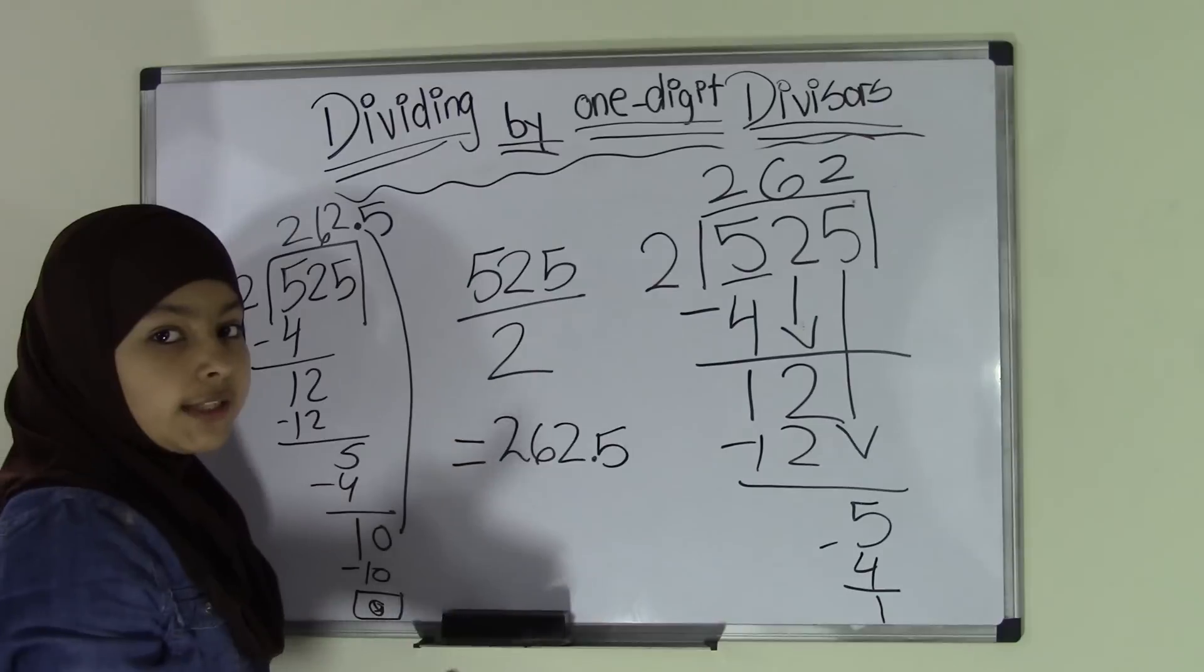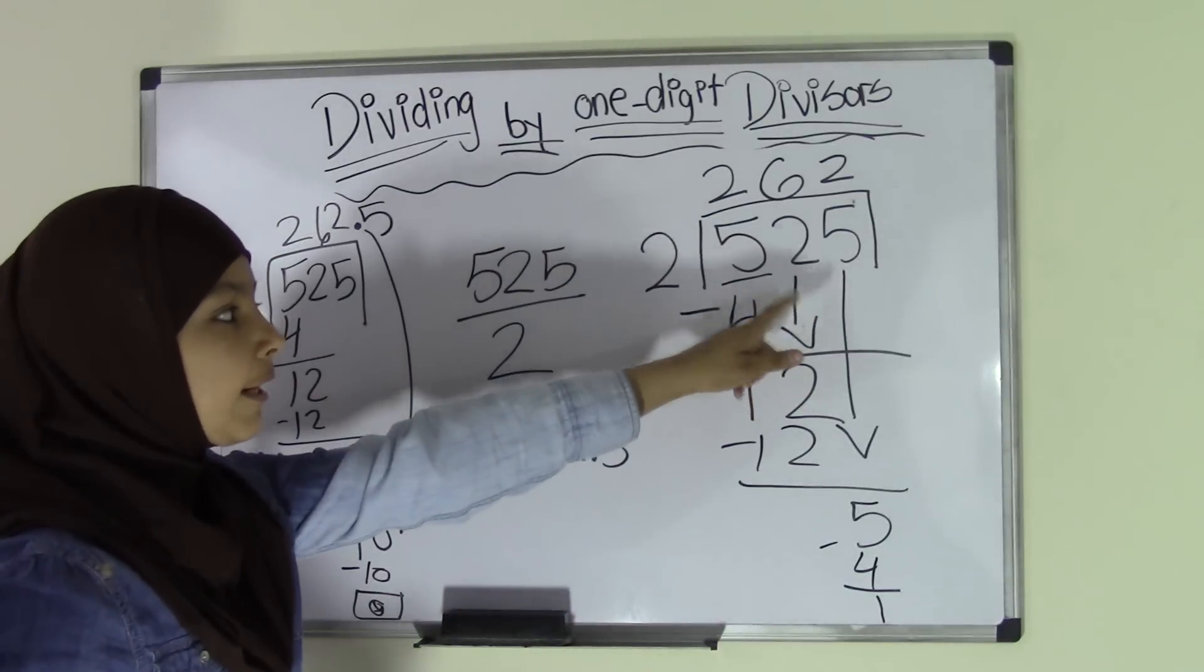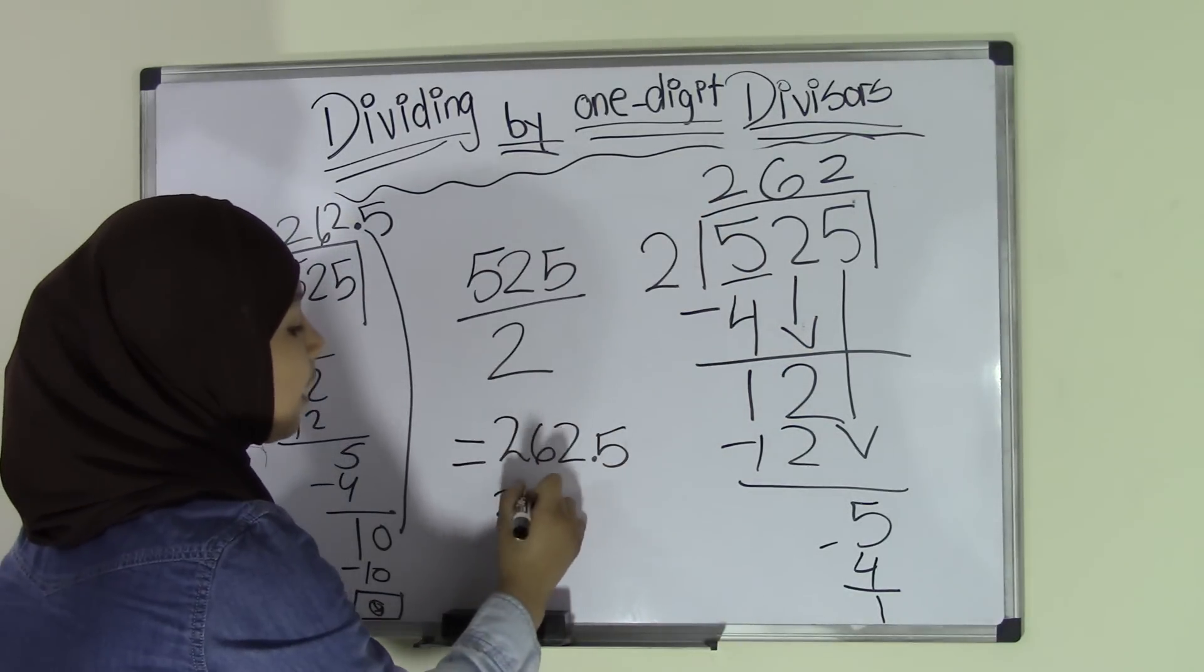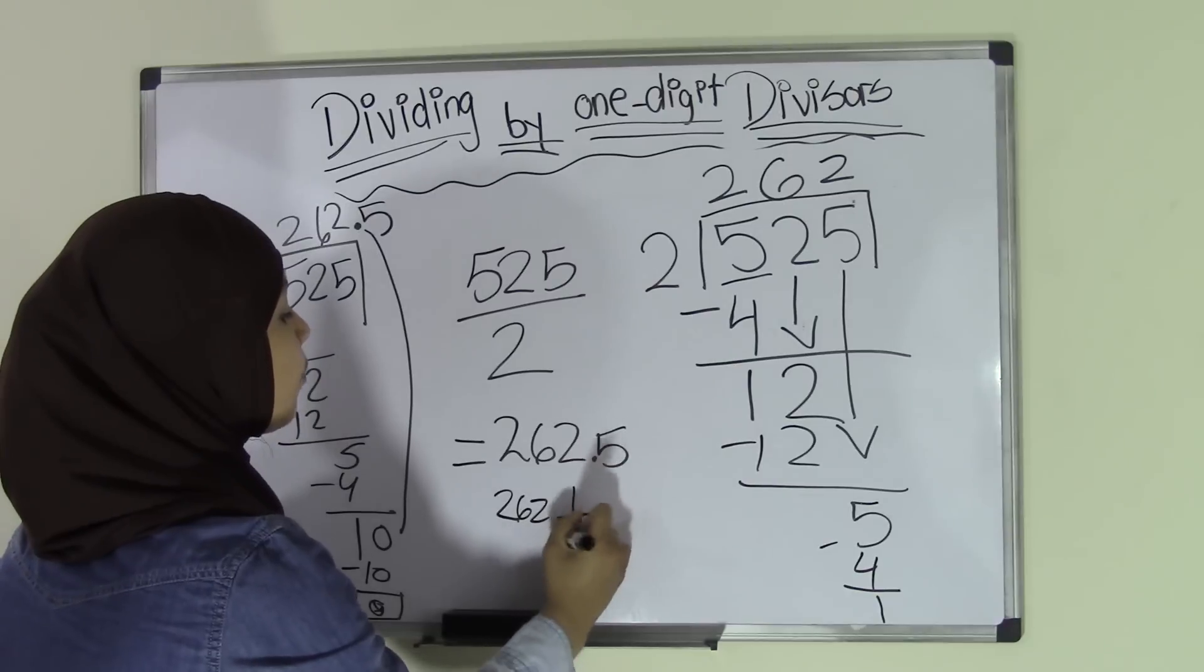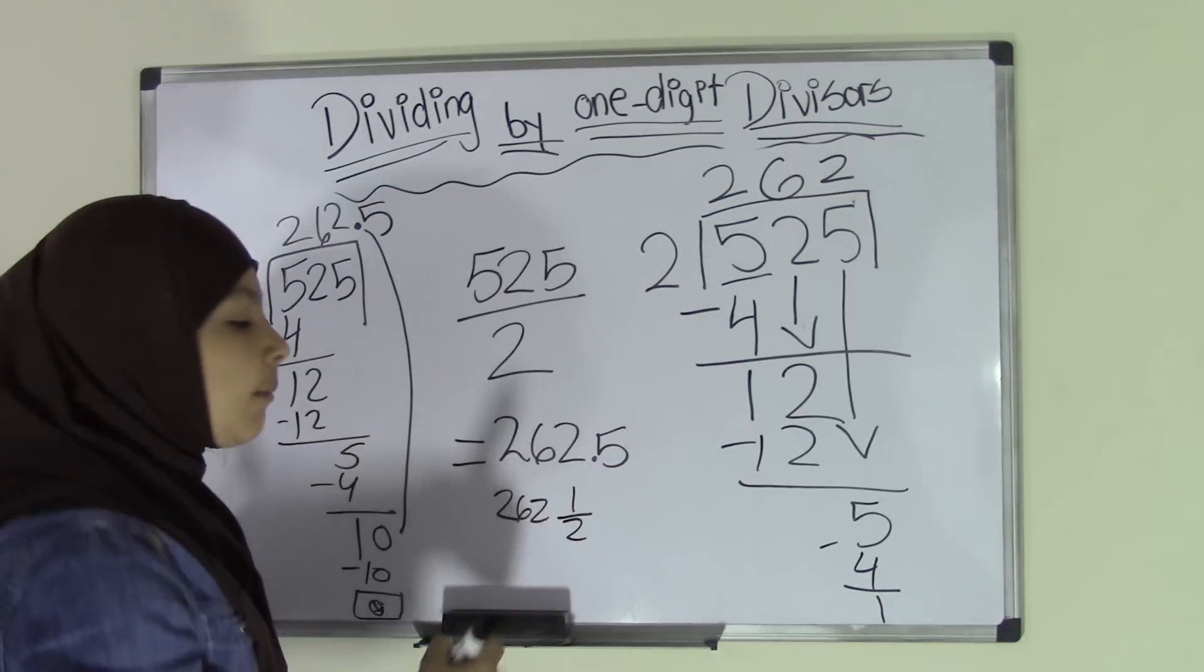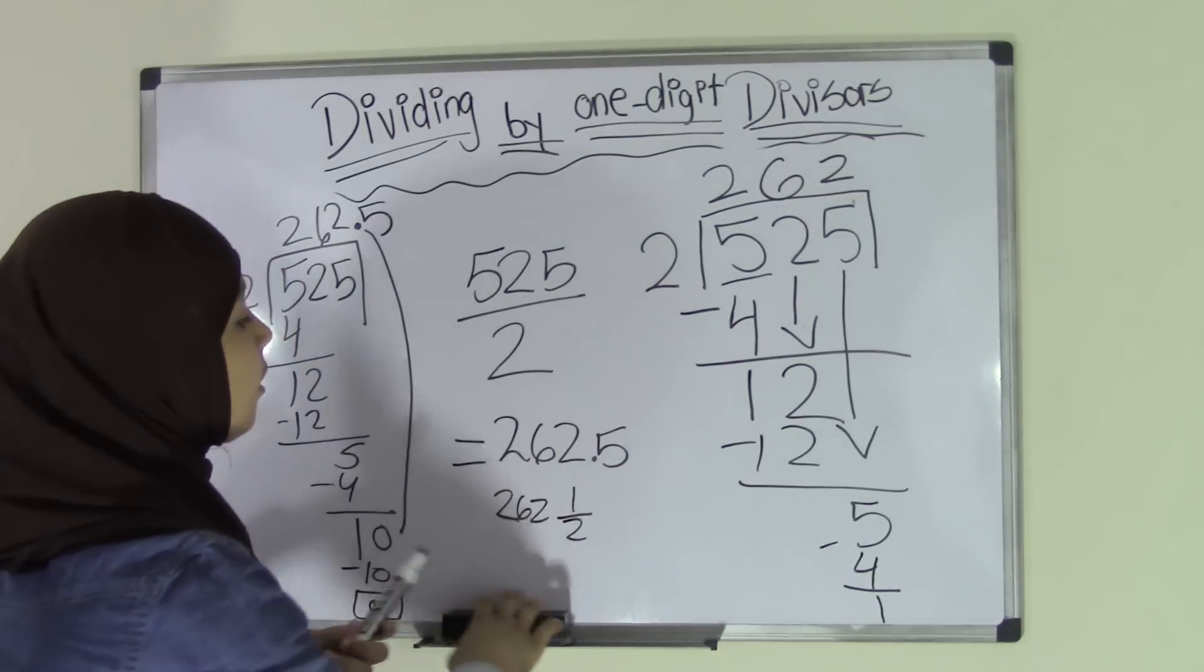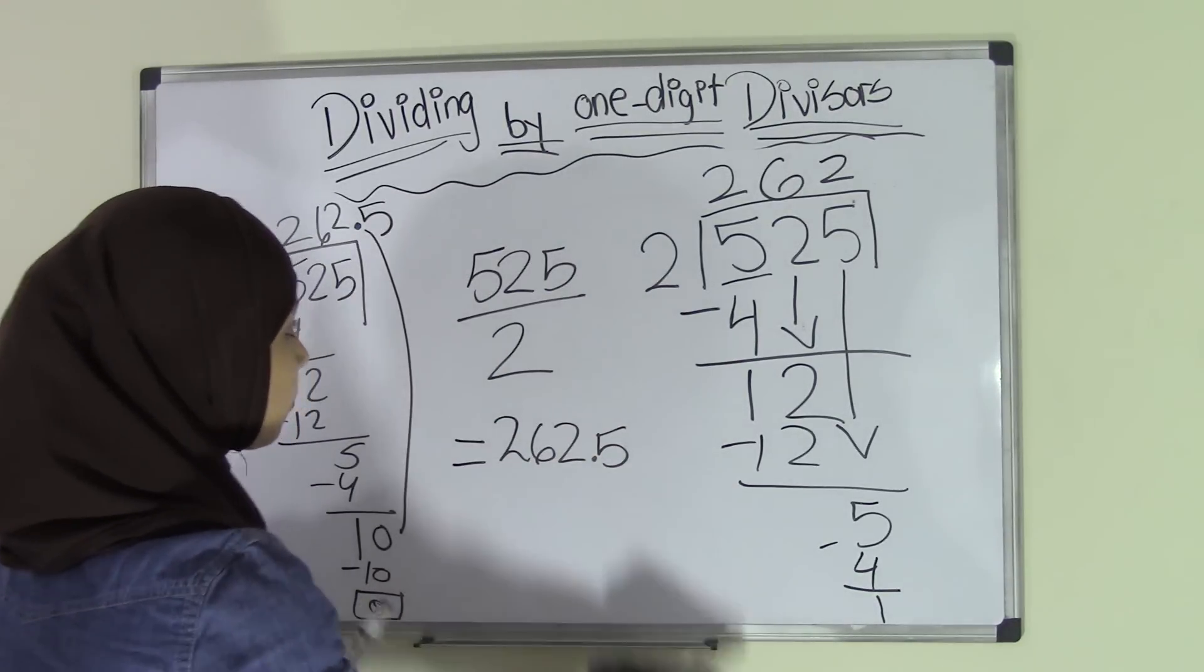So now if we want to check this, we can always go back to this problem right here. 262 and 1 half. That was our improper fraction. We know that 0.5 is 1 half. That means that this is the right answer. So that was another problem that we looked at.